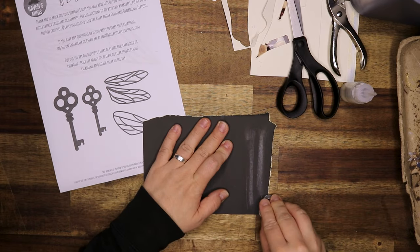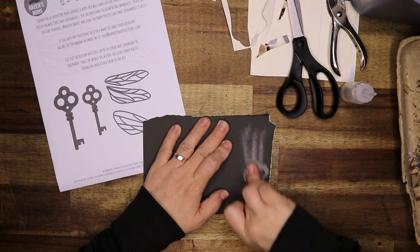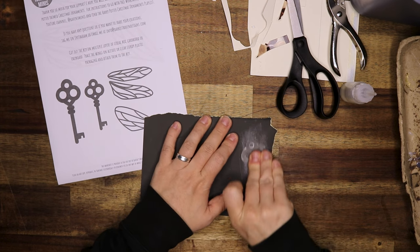Now I'm going to sand down the key with some very fine grit sandpaper. This is so that the glue has something to adhere to.